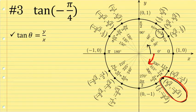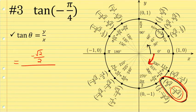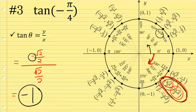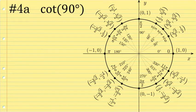Negative π/4 has an associated x-coordinate of √2/2 and y-coordinate of negative √2/2. So the ratio y over x is negative √2/2 over positive √2/2. Anytime you have a value over itself, even if the value is irrational, it equals one. There is a negative factor in the numerator, so it will be negative one. The tangent of negative π/4 radians is negative one.